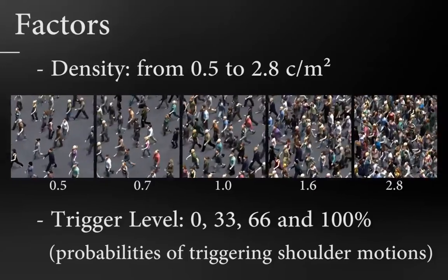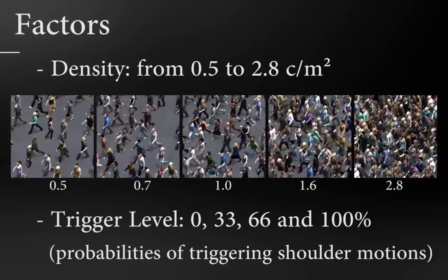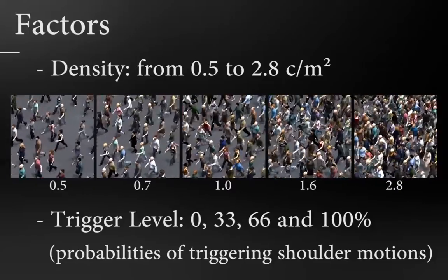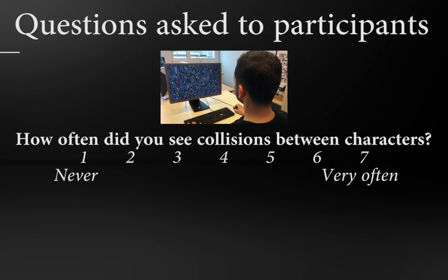Triggering rules are deterministic and depend on the distance characters pass by. These trigger levels are 0, 33%, 66% or 100%. Based on these factors, several stimuli were presented to participants who had to answer two questions each time.